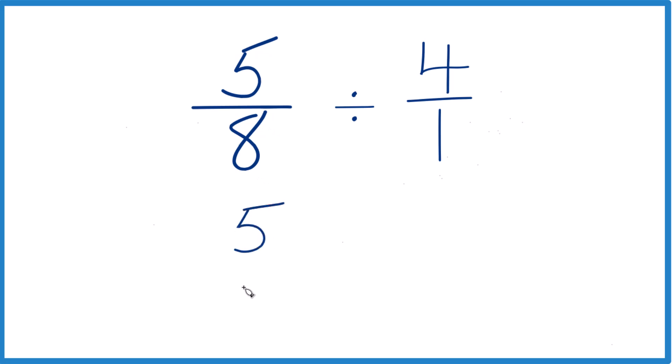We take our 5 eighths here, and instead of division, we're going to multiply by the reciprocal of 4 over 1. Denominator comes to the top, numerator to the bottom, 1 over 4, or 1 fourth.